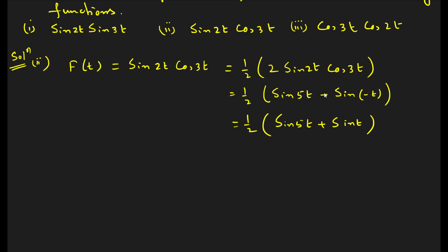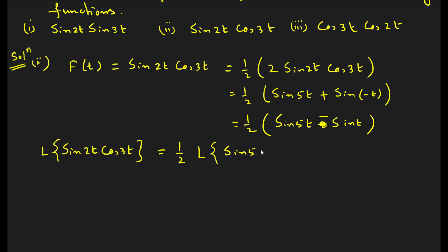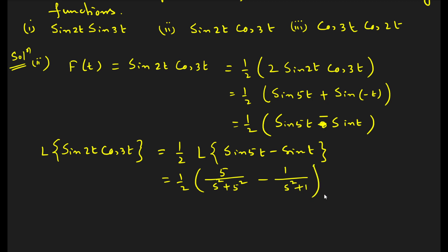Now take the Laplace transformation of sin(2t)·cos(3t). It will be half outside, times the Laplace transformation of [sin(5t) − sin(t)]. The Laplace transform of sin(5t) is 5/(s²+25), and sin(t) gives 1/(s²+1). So the answer is (1/2)·[5/(s²+25) − 1/(s²+1)].